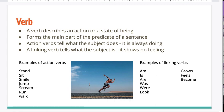An action verb tells what the subject does. It is always doing. An example of an action verb might be run, like he runs. Other examples of action verbs are stand, sit, smile, jump, scream, run, walk.